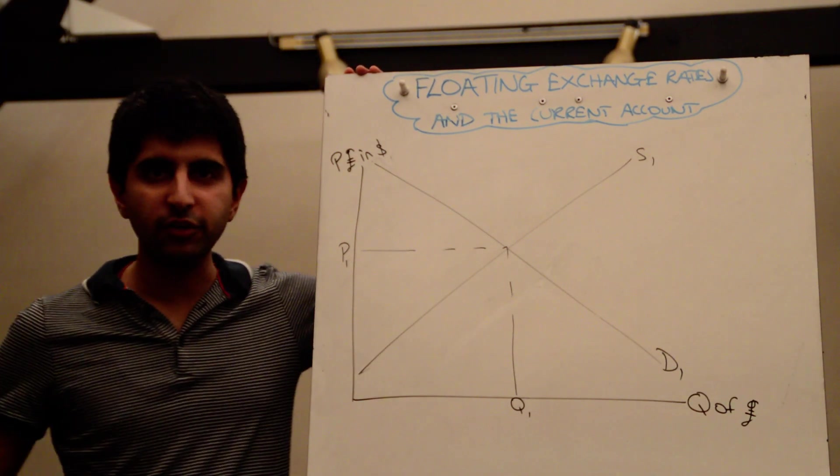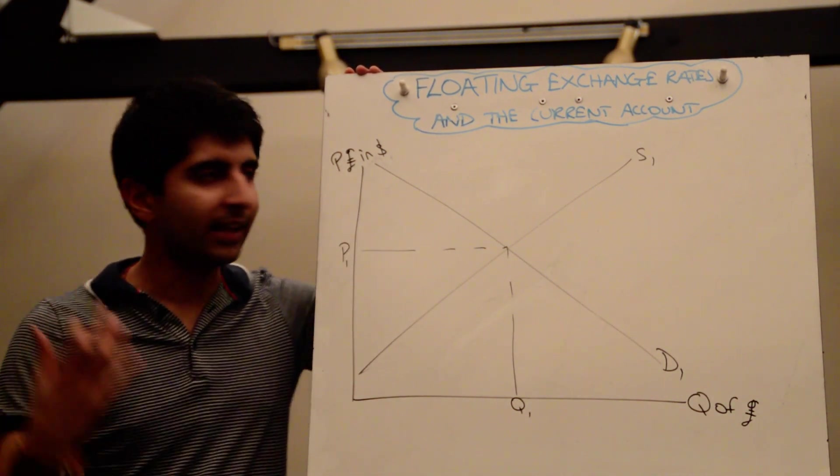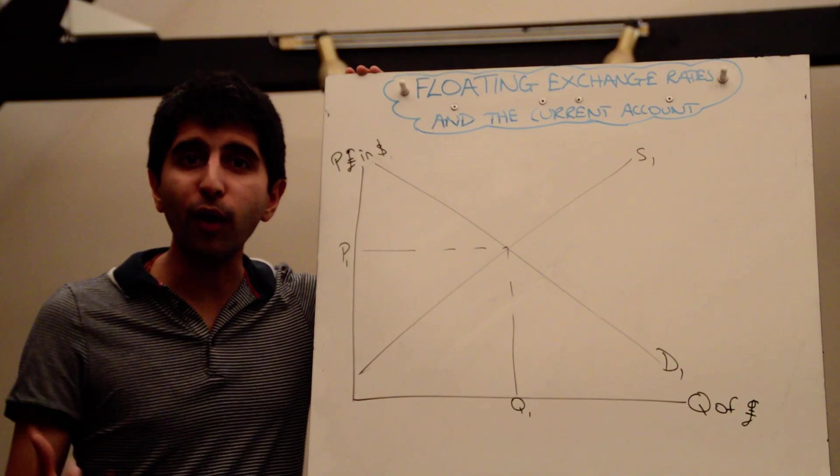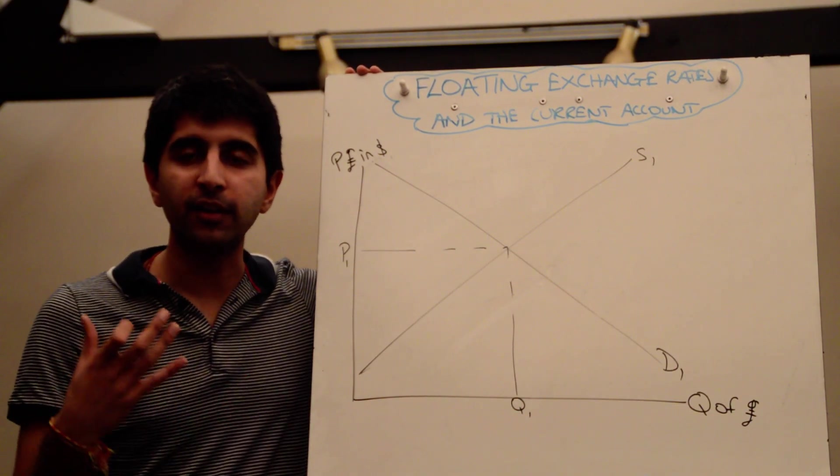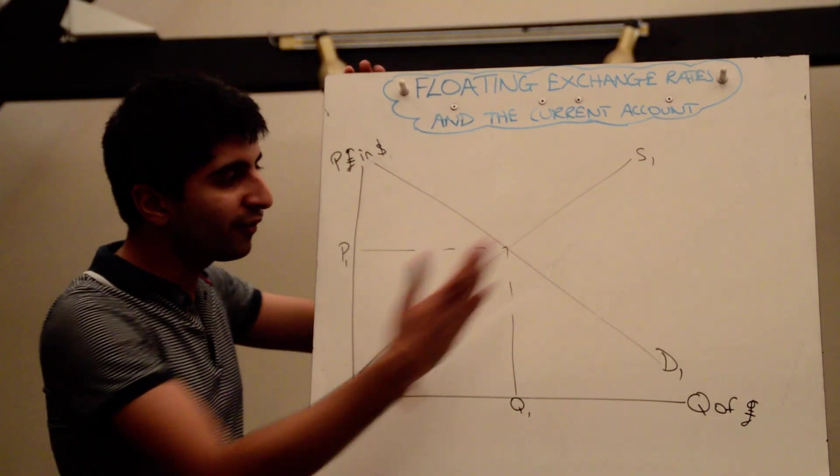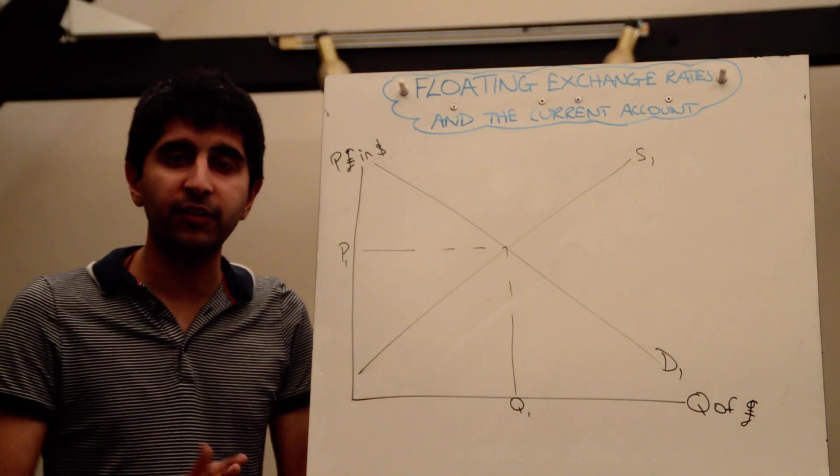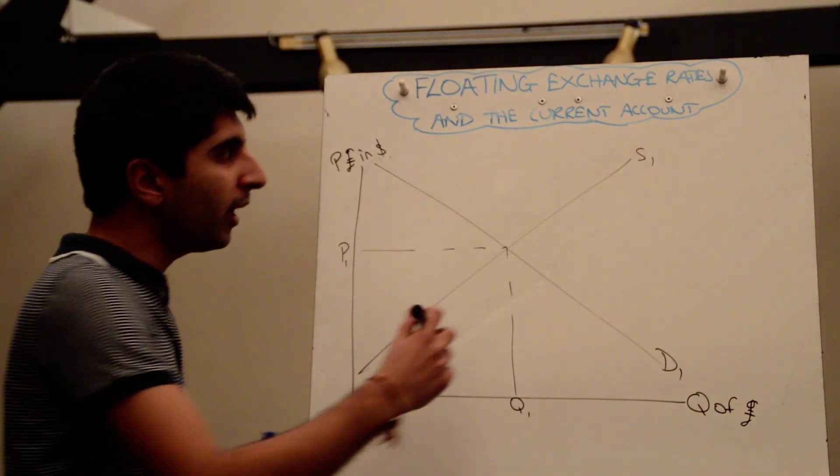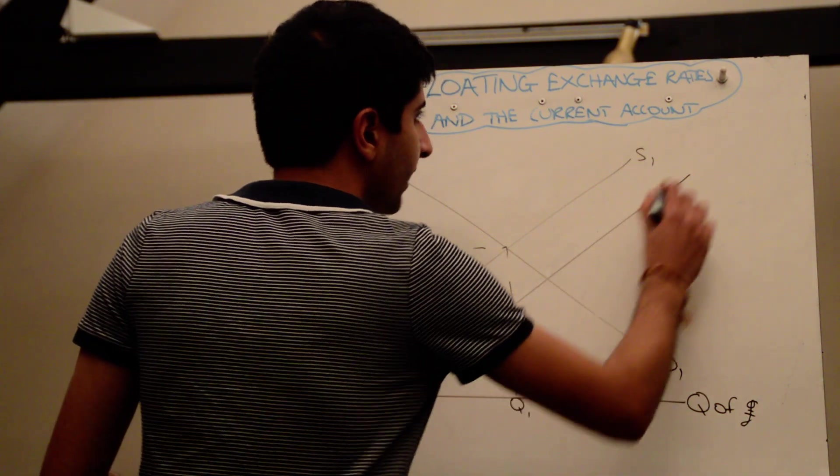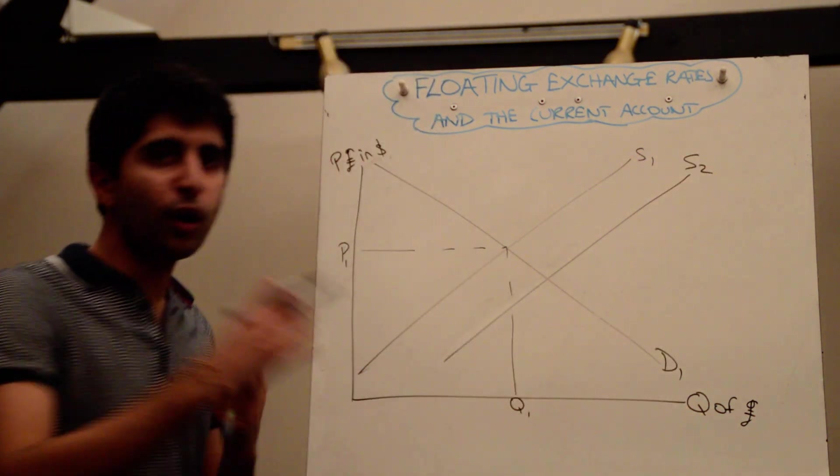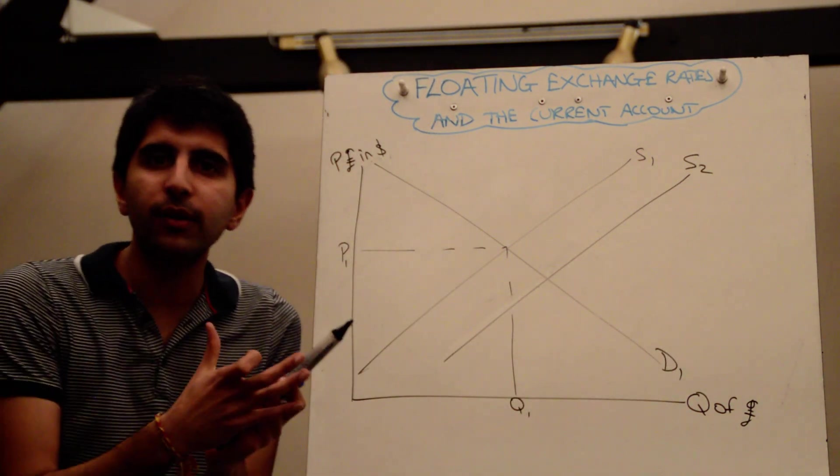So when it comes to the pound exchange rate market, what it means is that there is more supply of the pound than there is demand for the pound, which means overall the impact of a current account deficit and a trade deficit is that supply of the pound keeps shifting to the right. That's the overall effect, the net effect is an increase in supply of the pound.